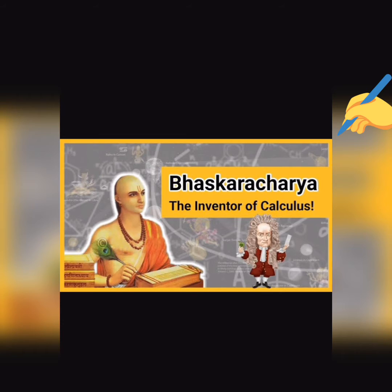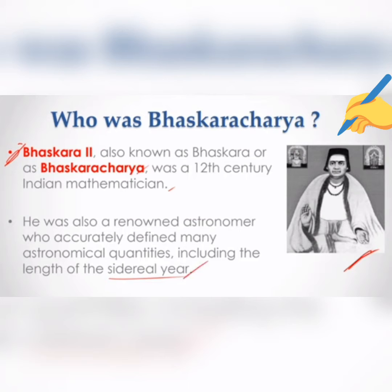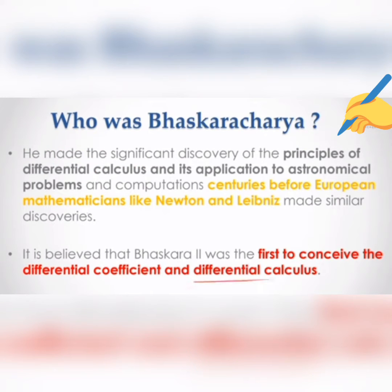Bhaskara Acharya is considered the inventor of calculus. Bhaskara Second was a 12th-century Indian mathematician and renowned astronomer who accurately defined many astronomical quantities, including the length of the sidereal year. He made the significant discovery of the principles of differential calculus and its application to astronomical problems, centuries before European mathematicians like Newton and Leibniz made similar discoveries. It is believed Bhaskara Second was the first to conceive the differential coefficient and differential calculus.